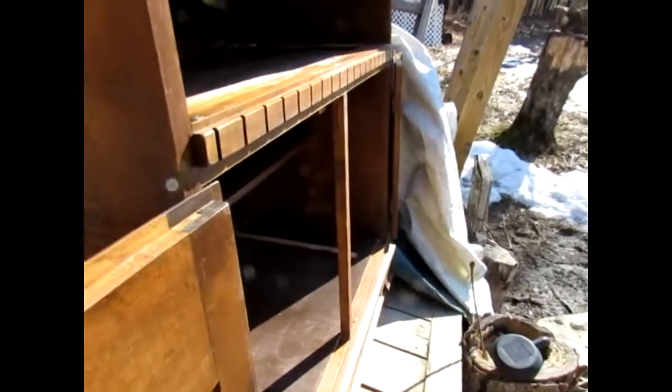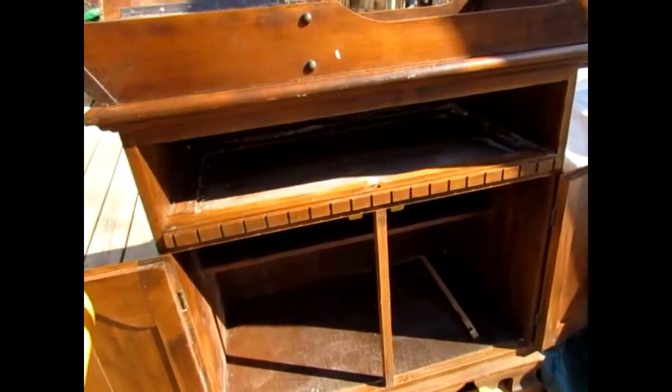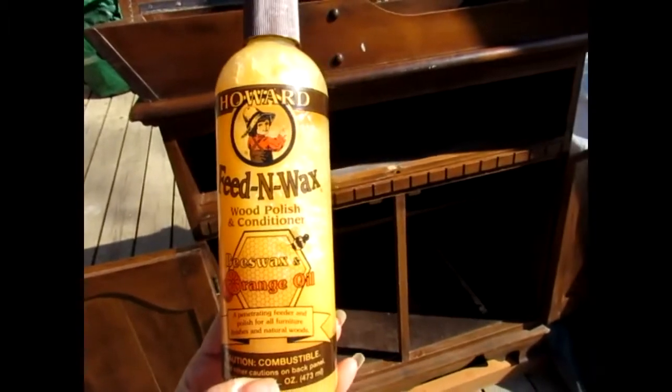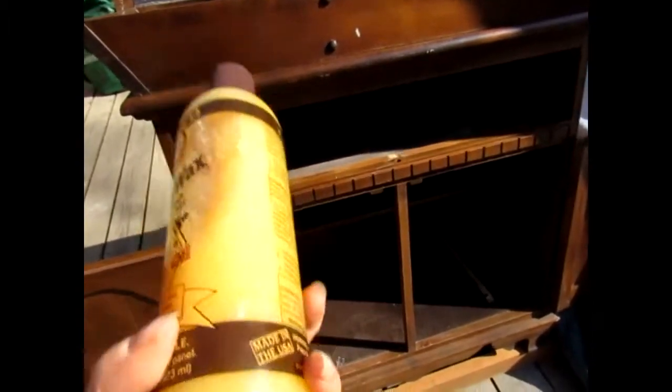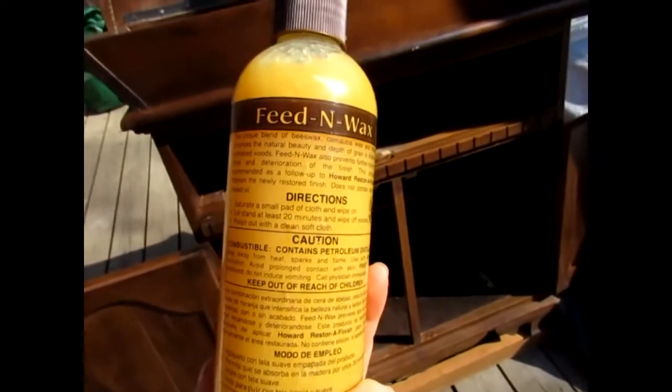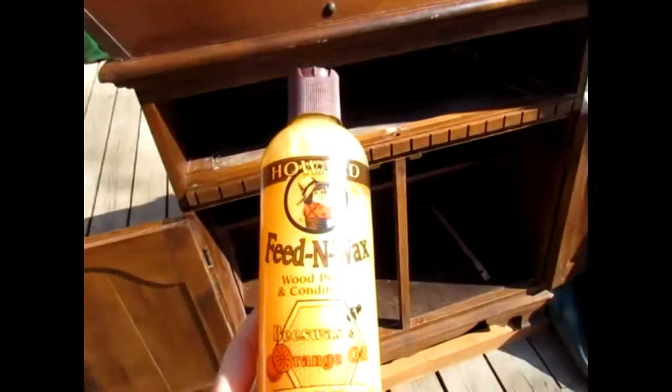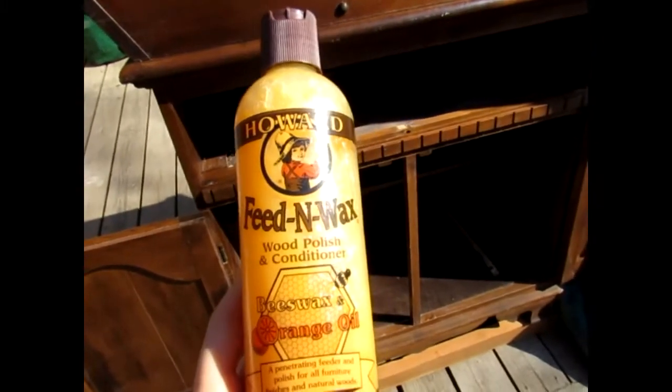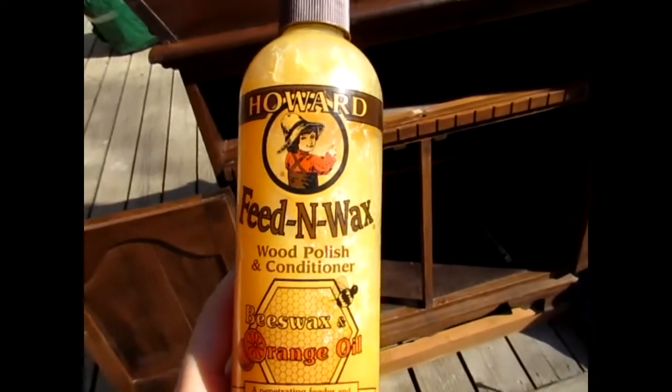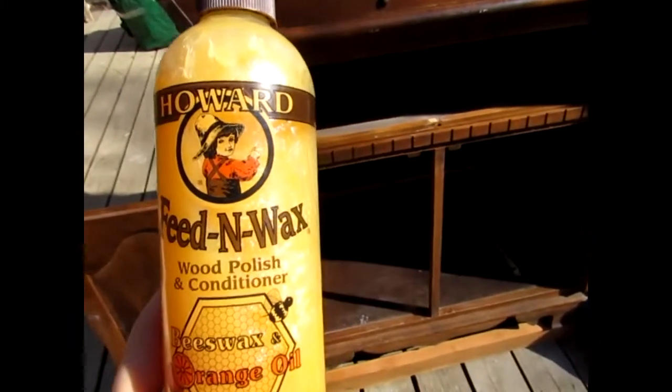So next step is we are going to do some feed and wax wood polish and conditioner. This is kind of like a natural way to help the wood stay preserved and look good, restore it. It's actually something that we had bought a long time ago, never even opened. So that's the reason why we're using it. There might be other things to use, but we're gonna give it a try and I'll put that coat on for you and see if we can see a difference.